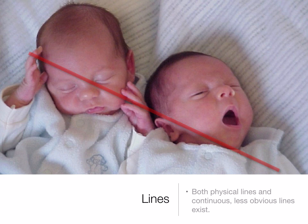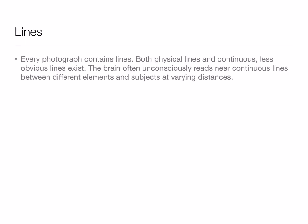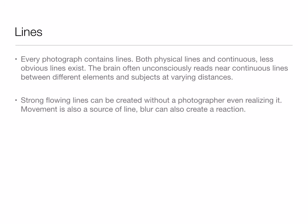Notice how his fingers are connected, leading down past the jawline of the other child, and we also have an S-curve line between their heads. Every photograph contains lines, except for ones that are just a solid color — both physical lines and continuous, less obvious lines exist. The brain often unconsciously reads near-continuous lines between different elements and subjects at varying distances. Strong flowing lines can be created without a photographer even realizing it. Movement and blur can also create a line.